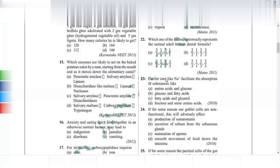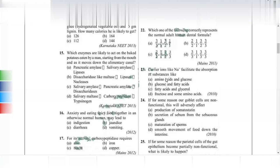If goblet cells are non-functional, mucus production will be affected, since goblet cells in the stomach produce mucus.